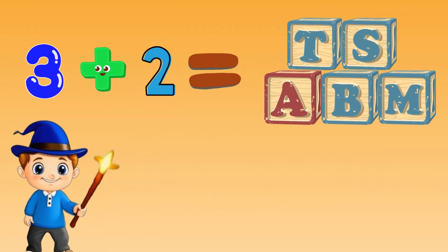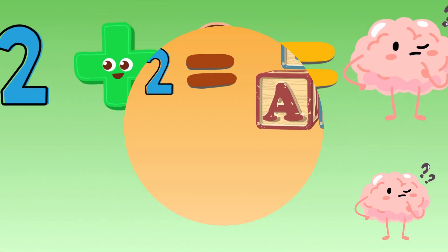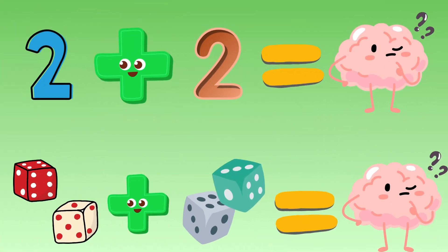Three plus two equals five blocks. You did it! Now it's your turn. Let's play the magic plus game. Two plus two equals...